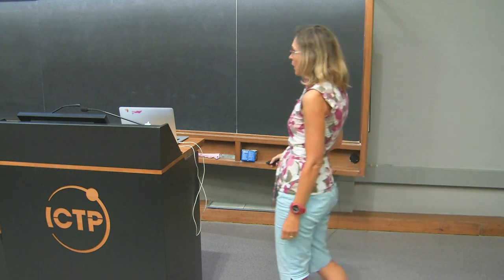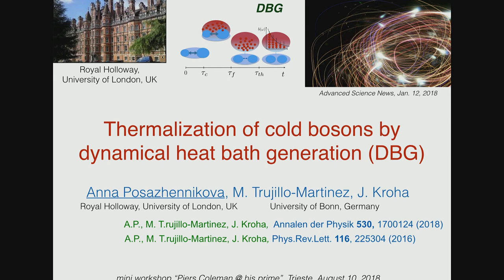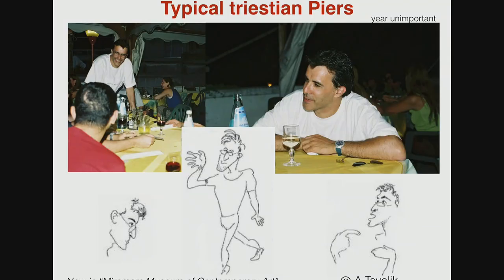This work is summarized in these two recent publications. It's with the strong correlation group of Bonn, namely with Hans Kroger and Mauricio Trochelio Martinez. It's an honor and pleasure to be here, to be invited here to celebrate Peers' birthday.